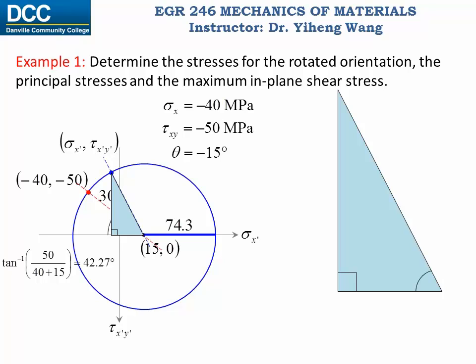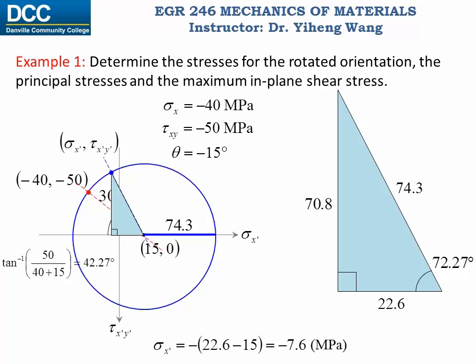For this right triangle, this angle right here equals to 42.27 plus 30 degrees, which is 72.27 degrees. The hypotenuse side is the radius of the circle, 74.3. Therefore from trigonometry we can determine the length of these two sides. Given the location of this point we can determine that sigma x prime equals to negative 7.6 MPa, and tau x prime y prime equals to negative 70.8 MPa. These results are the same as what we got before using the general equations.